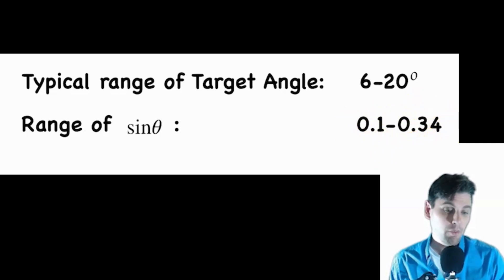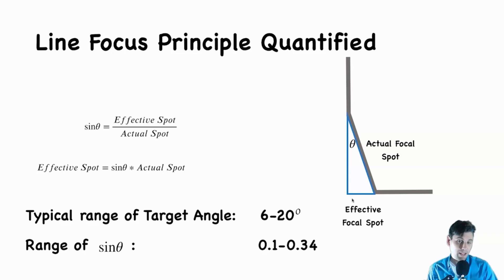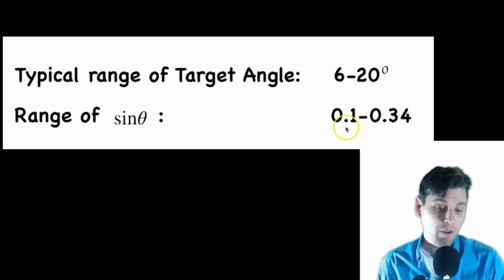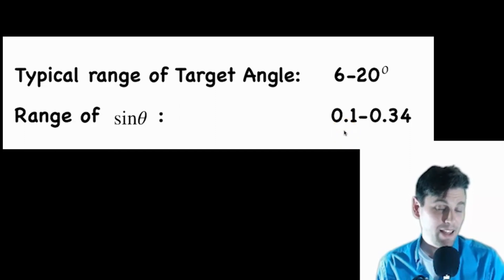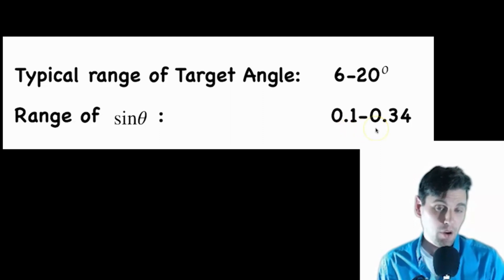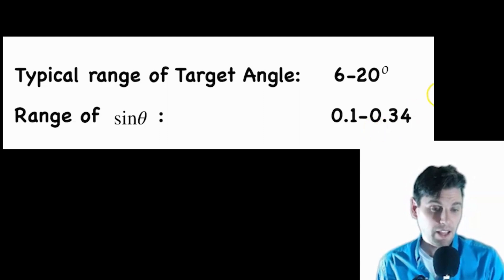Depending on how steep the angle is, the smallest case would be 0.1 — so basically the effective focal spot would be one-tenth the size of the actual focal spot. On the other side, it's about one-third the size — so in this dimension, it'd be one-third the size.